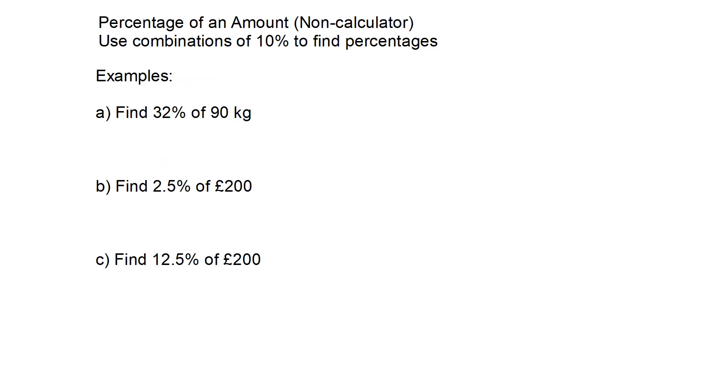Let's do some trickier ones. Remember, to find 1%, we divide by 100. To find 32% of 90kg, we could find 10%, which is 9kg. We could find 1%, which is 90 divided by 100, which is 0.9. 30% is 10% multiplied by 3, so 9 times 3 is 27. If 1% is 0.9, then 2% is double that, which is 1.8. We have 30% and 2%, we add them up and get 32%, which is 28.8kg.